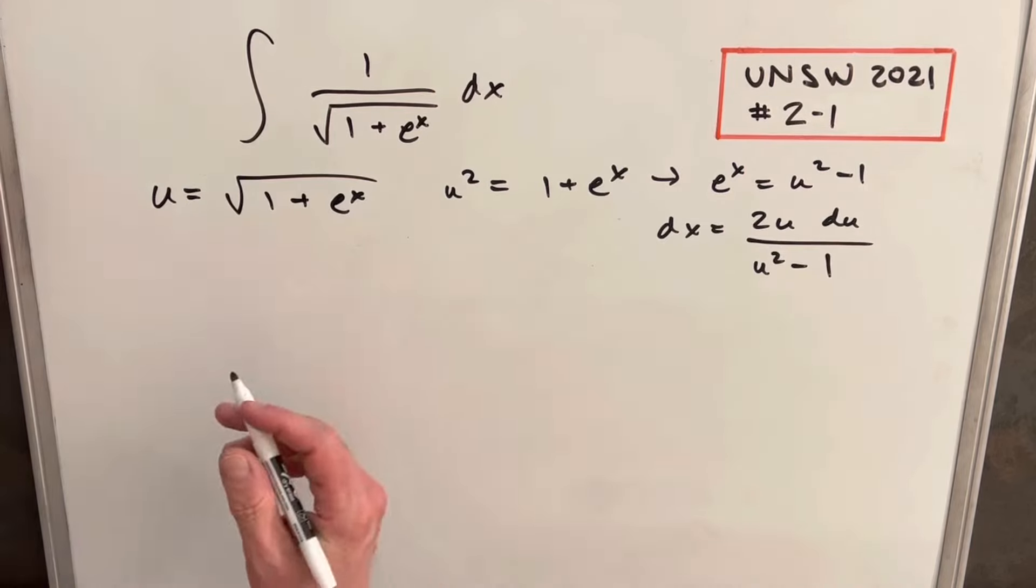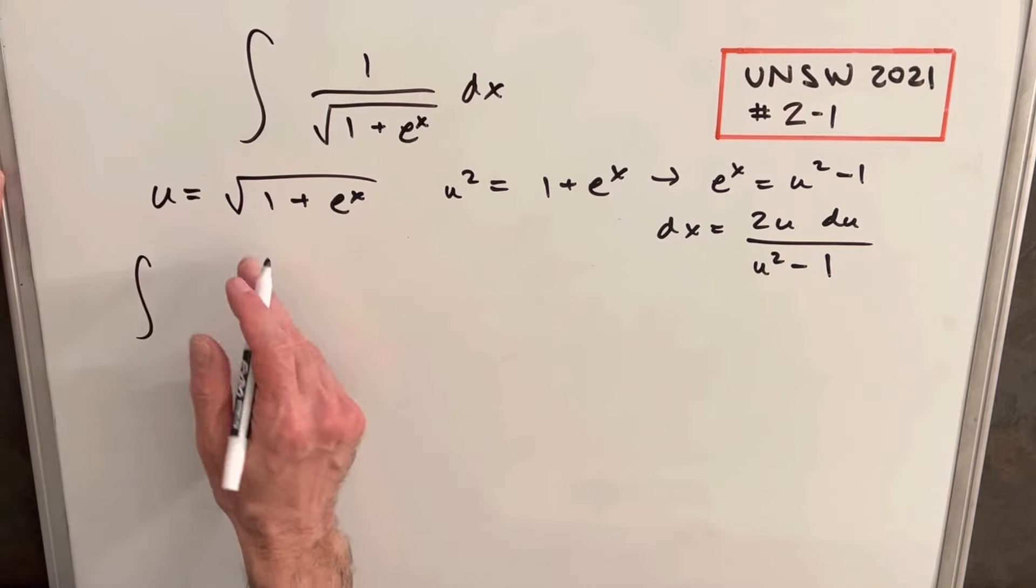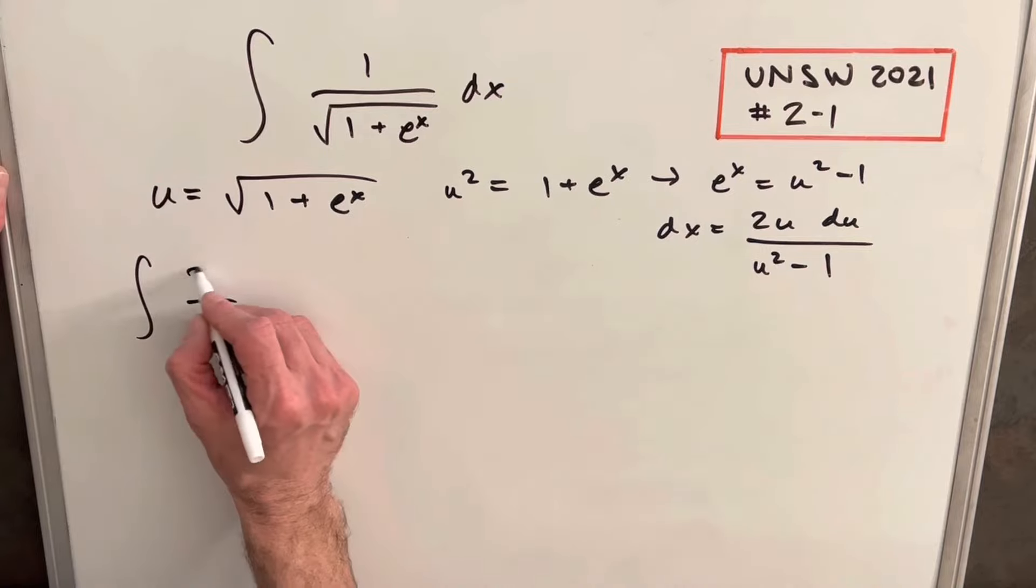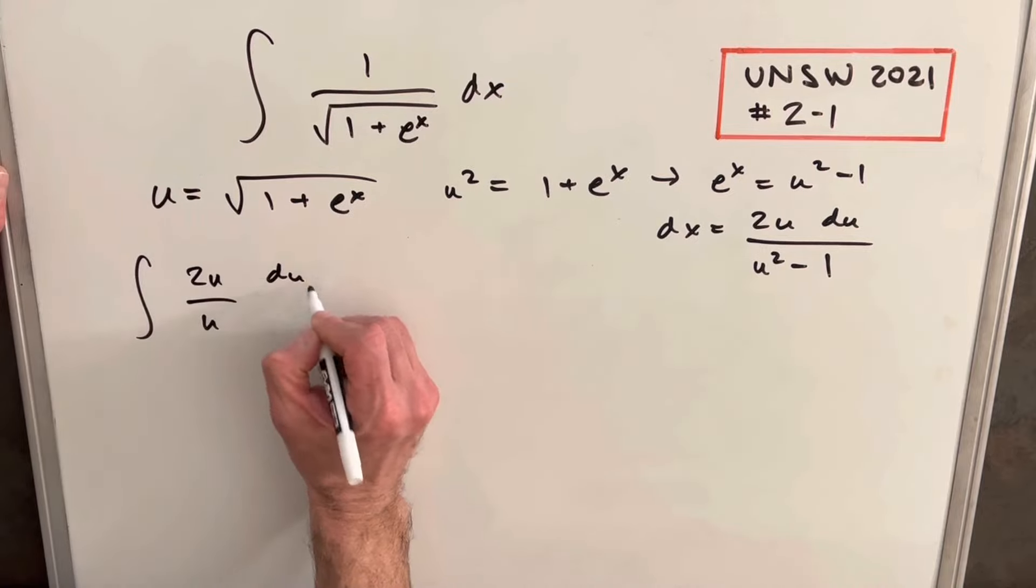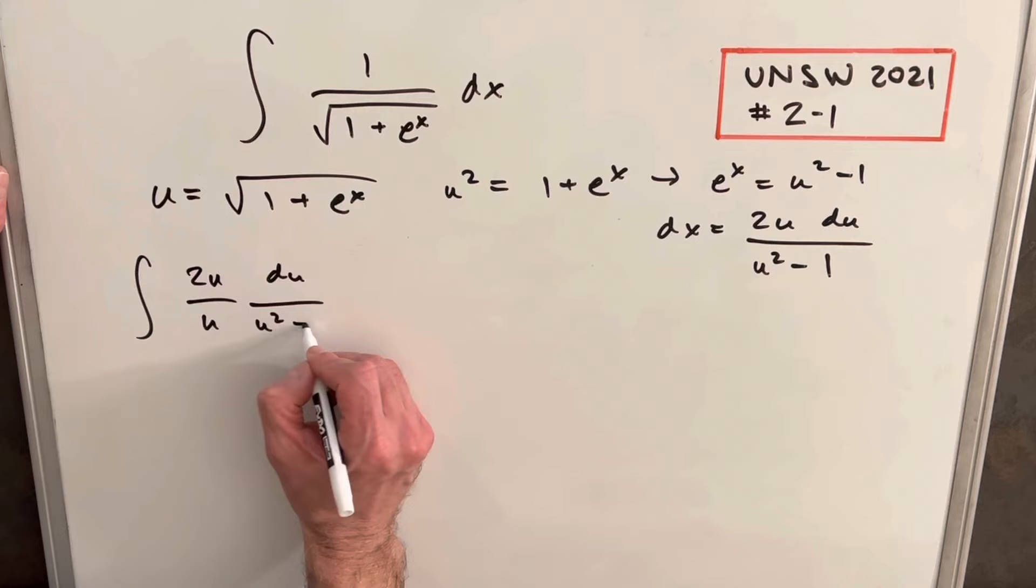Now we're ready for our substitution. The integral becomes 1 over u times 2u du over u squared minus 1.